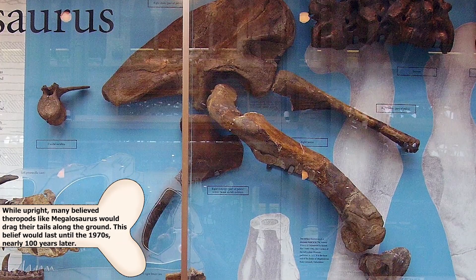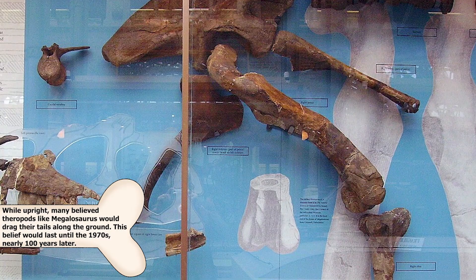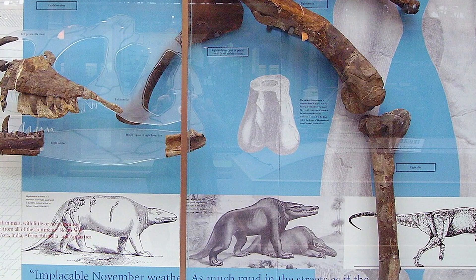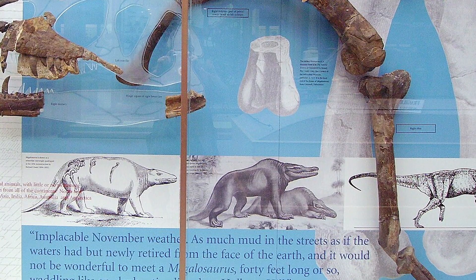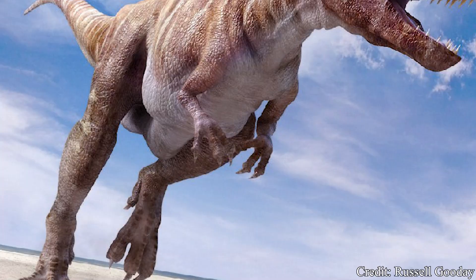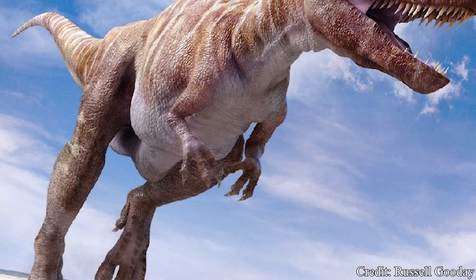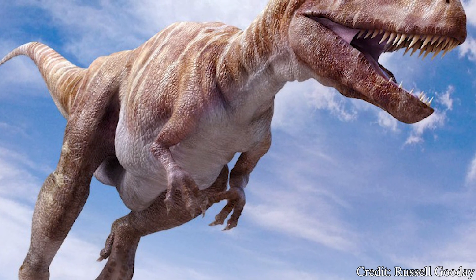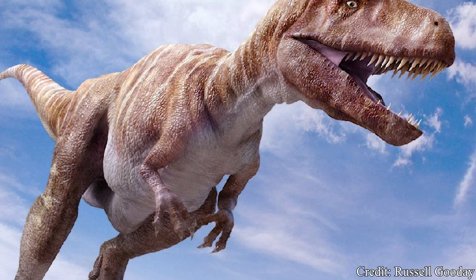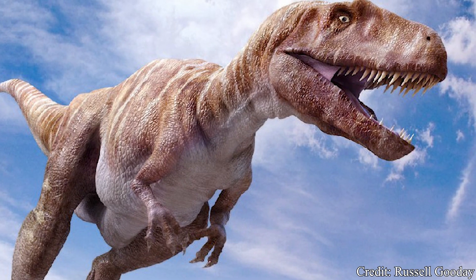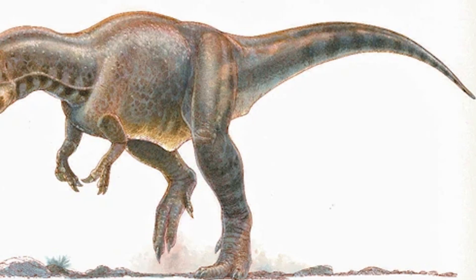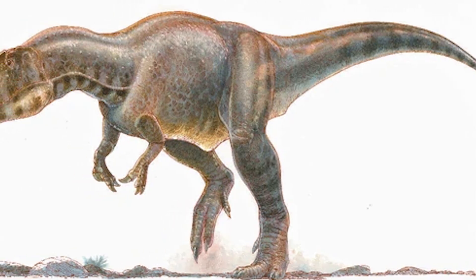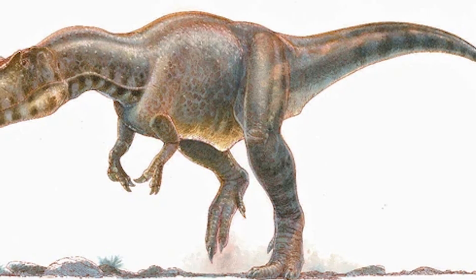Over the following 100 years or so, various remains would be assigned to the genus, but paleontologists may have become too generous in terms of what qualifies as a Megalosaurus. Throughout the 19th and going into the 20th century, Megalosaurus was seen as the typical carnivorous dinosaur. For this reason, the grouping quickly became what is called a wastebasket taxon, where remains with no sufficiently distinct features would be classified under the Megalosaurus name as a sort of catch-all distinction.